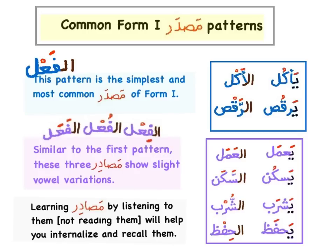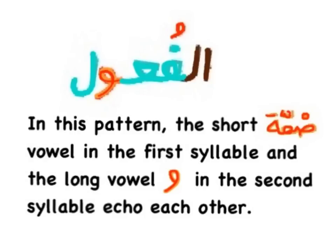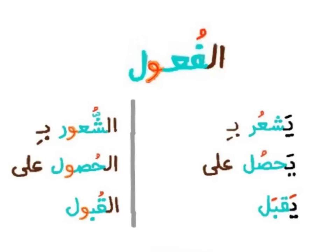Learning Mazdar by listening to them, not reading them, will help you internalize and recall them. Another Form 1 pattern is Al-Fa'ul. In this pattern, the short Dhamma vowel in the first syllable and the long vowel Waw in the second syllable echo each other. Examples: يشعر بـ (he feels) → الشعور بـ (feeling/to feel); يحصل على (he gets/obtains) → الحصول على (to get/obtain); يقبل (he accepts) → القبول (acceptance/to accept).